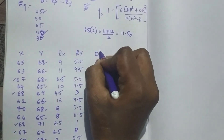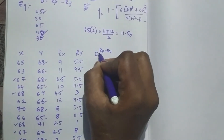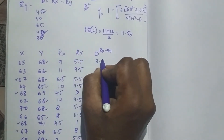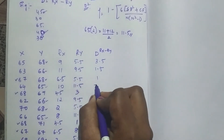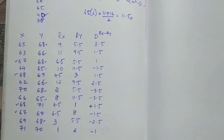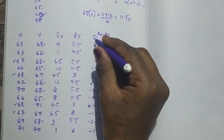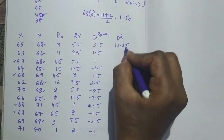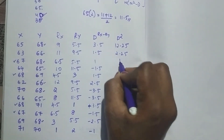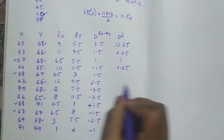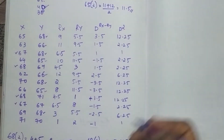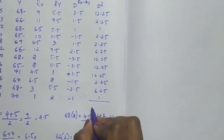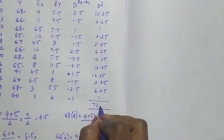Now I have to find D, which is rank of x minus rank of y. After subtracting the ranks, I get values like 3.5, 1.5, 1, -1.5, and so on. Now I have to find D². Squaring these values gives 12.25, 2.25, 1, 2.25, and so on. After finding all D² values and summing them up, the summation of D² is 72.5.